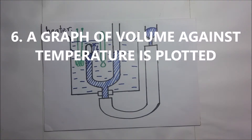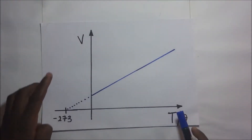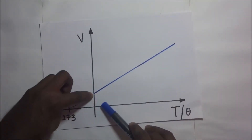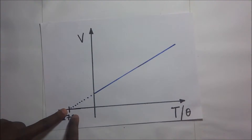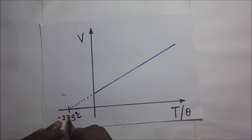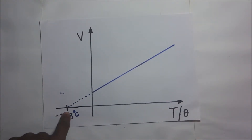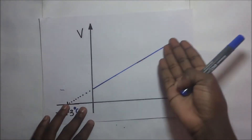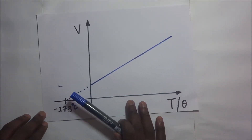After that, we plot a graph of volume against temperature. When we plot this graph we get a straight line, and if we extrapolate this line we find it ends at a temperature of negative 273 degrees Celsius. This happens to be our absolute zero temperature. Negative 273 degrees Celsius is internationally recognized as 0 Kelvin, the beginning point of the absolute temperature scale.